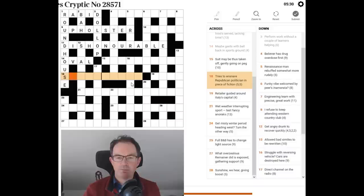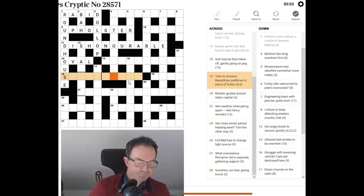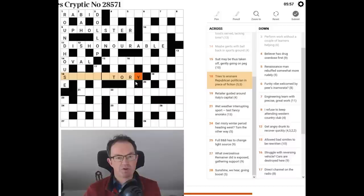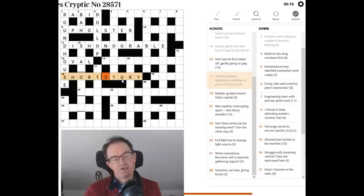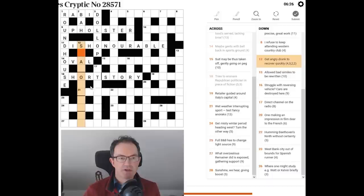Tries to ensnare. Republican politician in piece of fiction. Tries to ensnare. Well try. I think it's going to be a word for tries. It's going to ensnare. It's going to surround an R for Republican. A politician. Oh something something story is the answer. Politician will be Tory. Often politicians are Tories in crosswords because Tory is such a useful collection of letters. So tries a piece of fiction. A short story. Shots. If you have a shot at something you have a try at it. So put shots around R. So the only reason I was able to solve this was because I could understand how the wordplay worked.